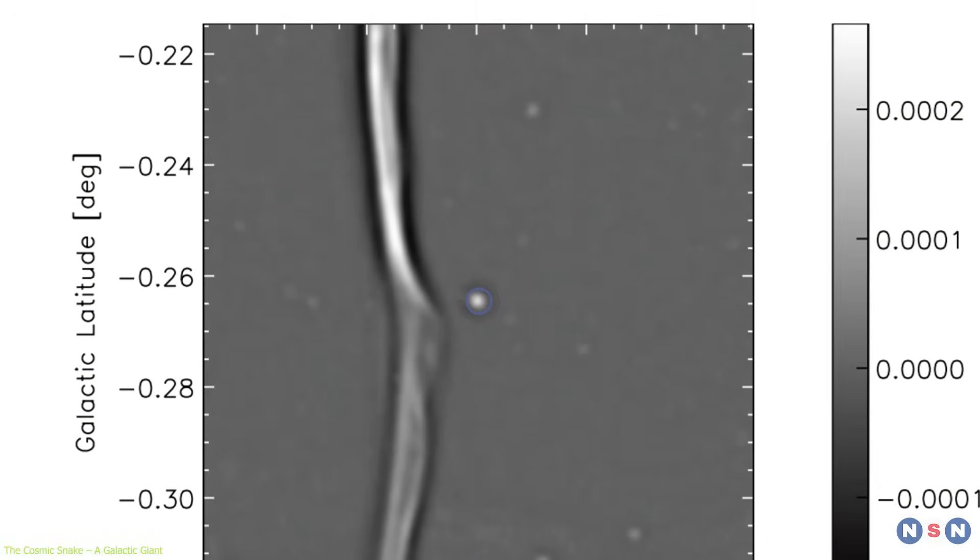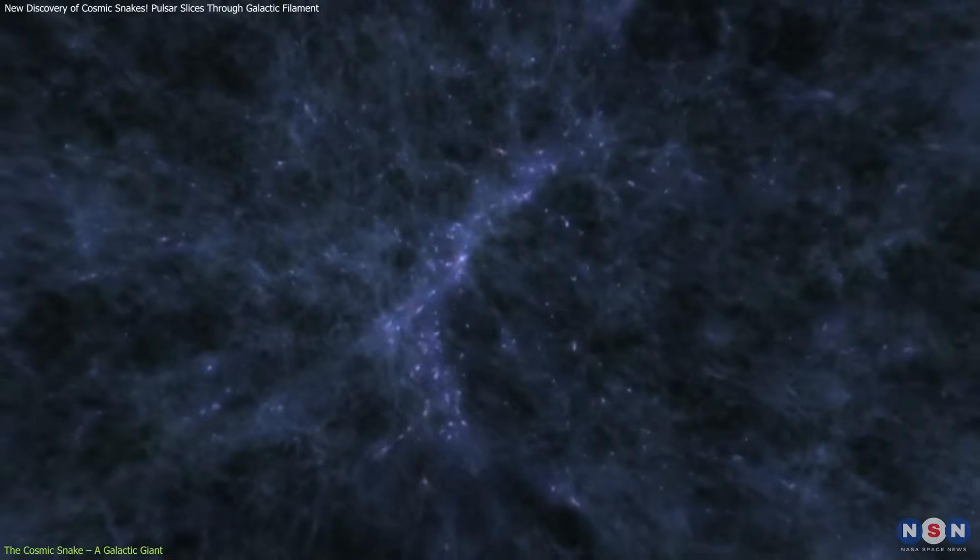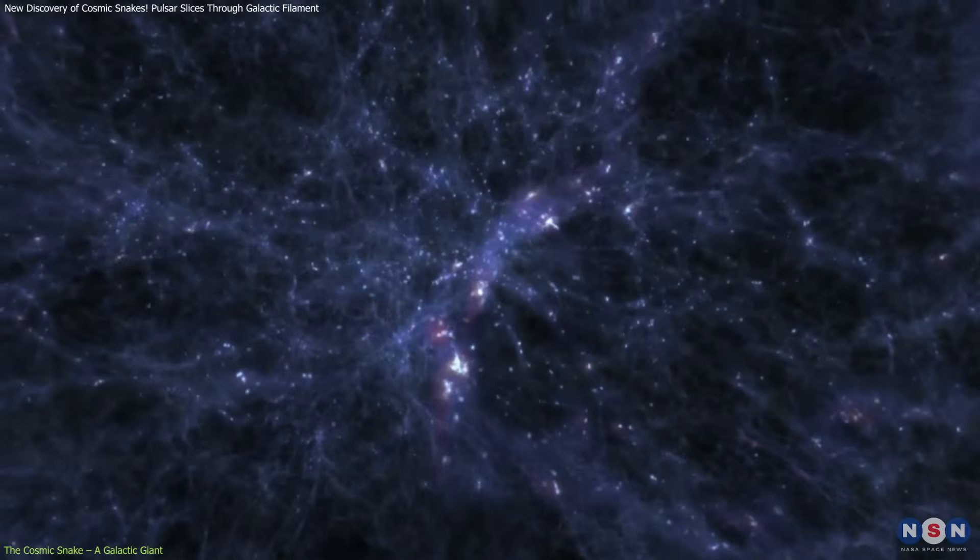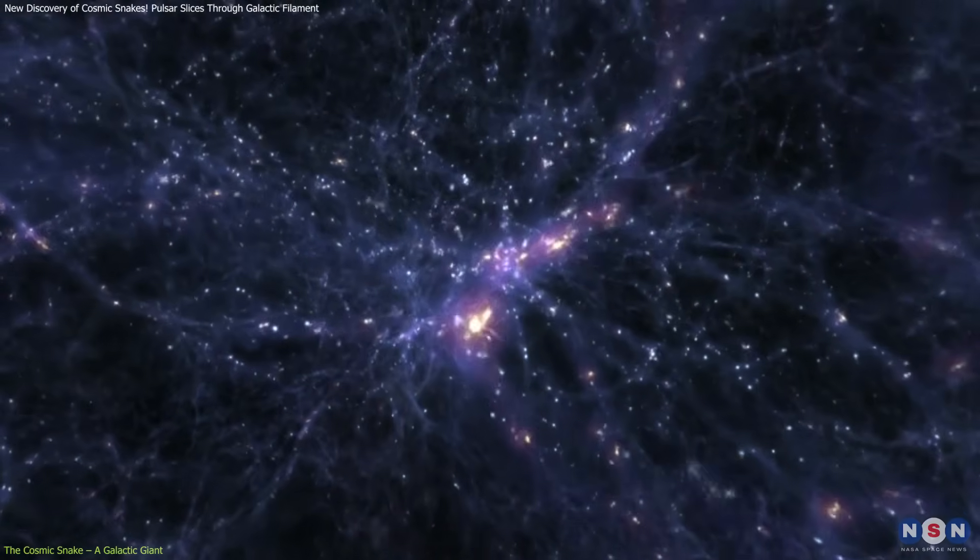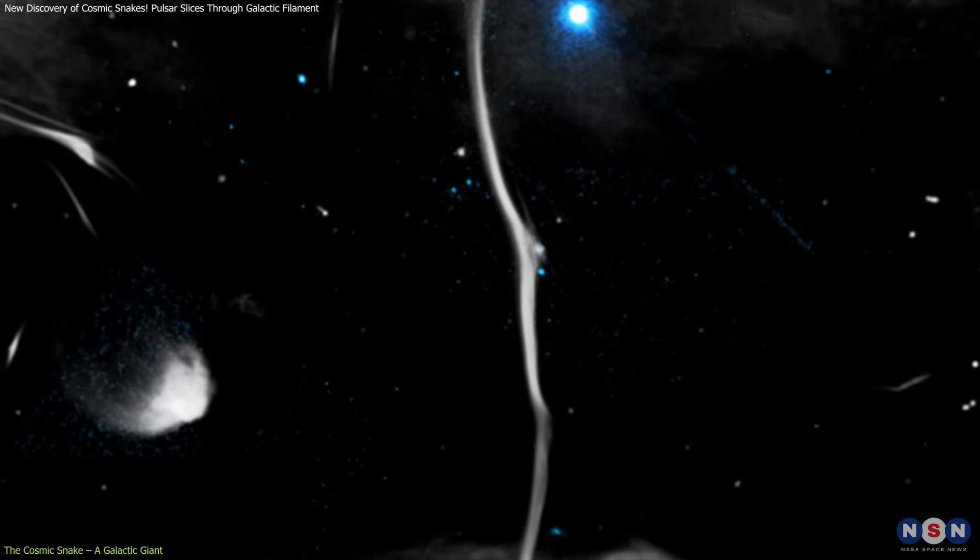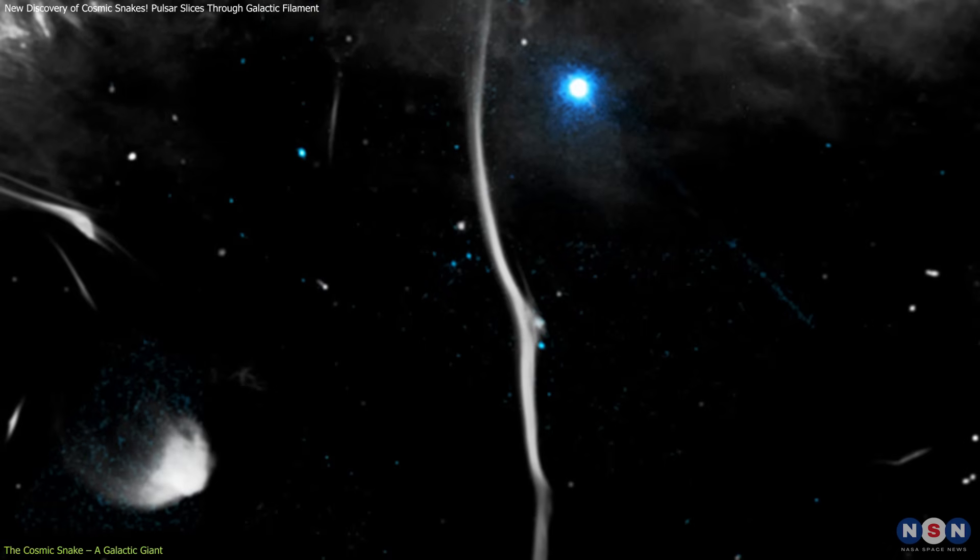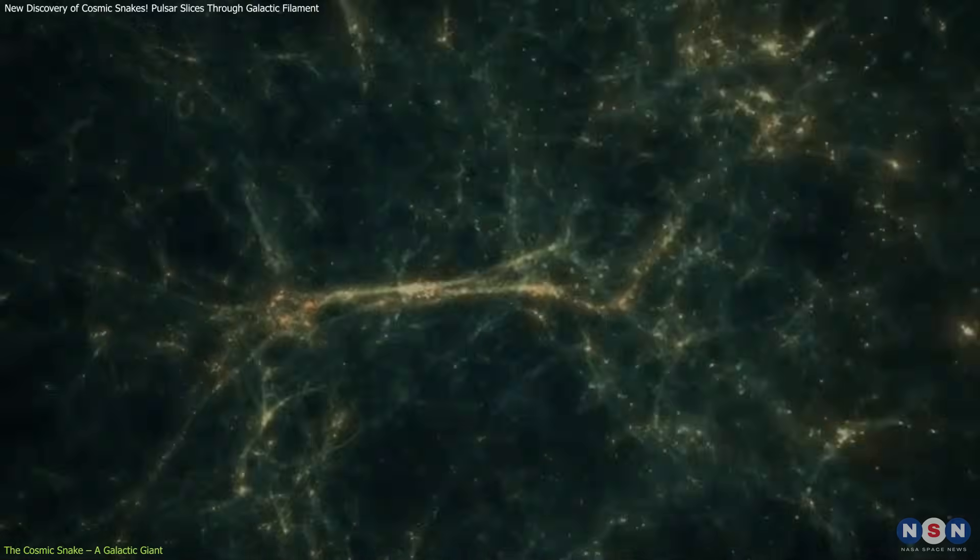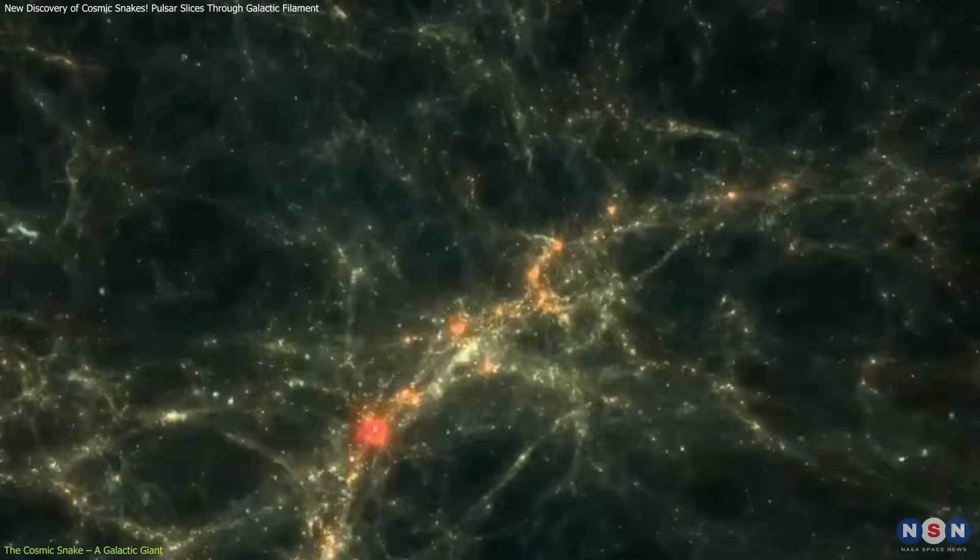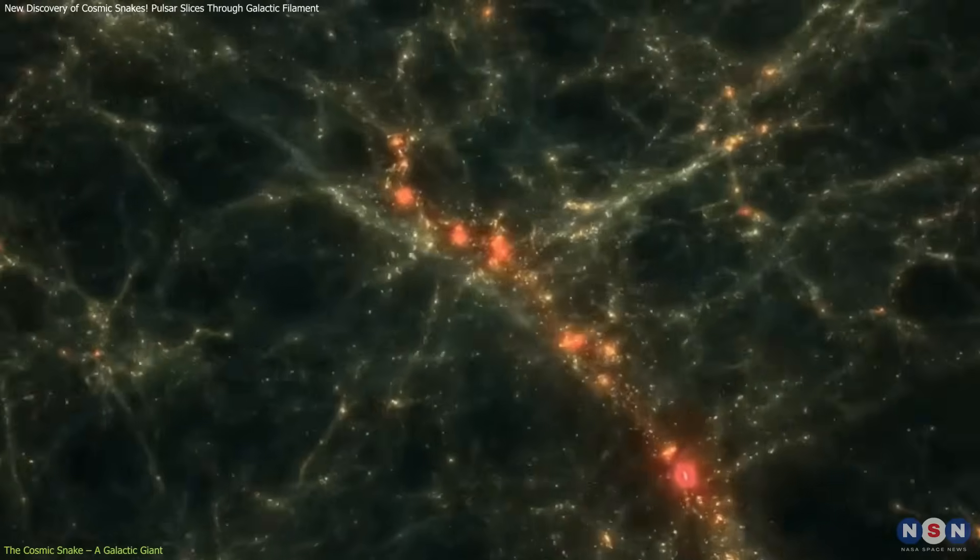Often called the bones of the galaxy, these structures trace the underlying spiral arms and guide gas flows essential to star formation. What makes filaments like this so important is their role as star-forming highways. Gas and dust flow along these structures into regions where stars are born.